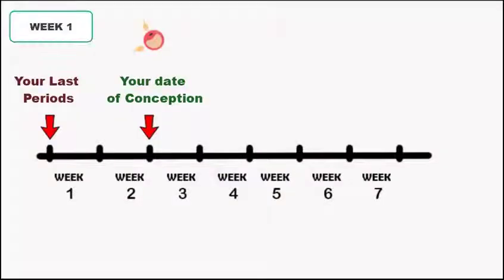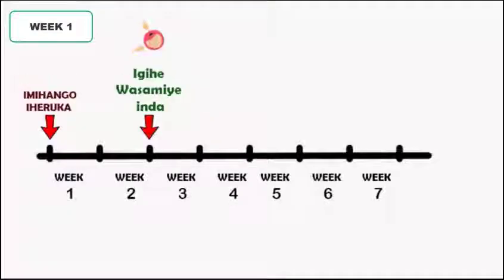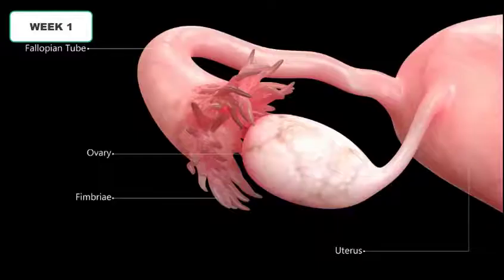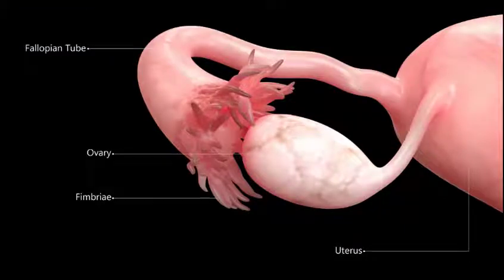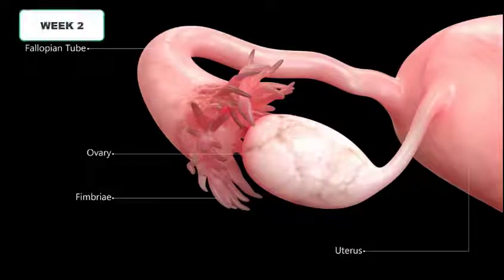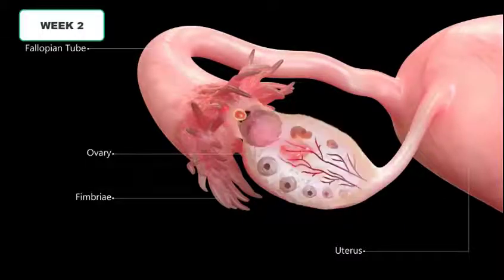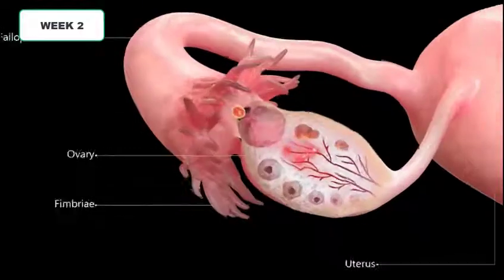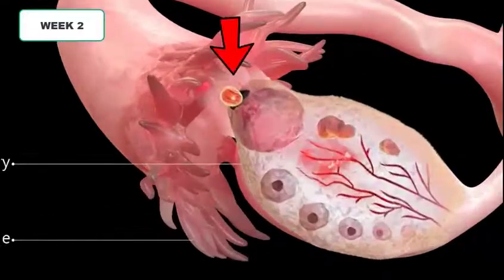Week one is the first seven days from your last menstrual period. During this week the ovule is growing and has not been released yet. In week two the egg is now mature and it is time for it to be released.